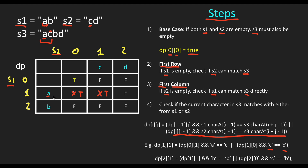Now we move to the next character, 'B' at position I=2, J=1. B is not equal to D, but B equals B in S2. For A, B, C to be an interleaving string, DP[1][1] also needs to be true — which it is — so we update DP[2][1] to true.